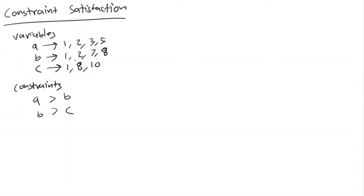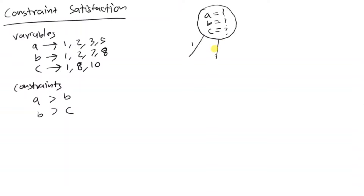Here's how you systematically go through combinations of values and figure out which ones satisfy your constraints. We start in a state where there's no value for a, b, or c. Then we pick a value for a first. The options are 1, 2, 3, and 5.